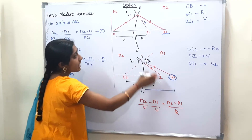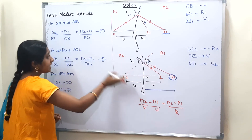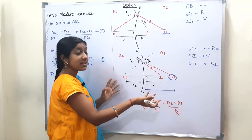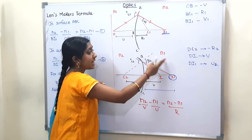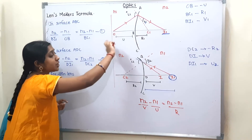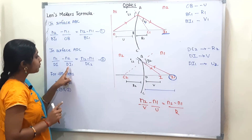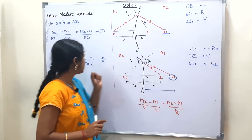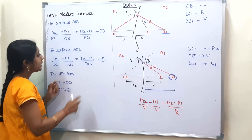The formula for refraction through spherical surfaces is: N2/V − N1/U = (N2 − N1)/R. We have already derived this formula in the previous video. For the first surface ABC, applying this formula: N2/Bi1 − N1/U = (N2 − N1)/BC1. This is the first equation. For the second surface ADC: N1/V − N2/Di1 = (N2 − N1)/DC2, where DC2 is the radius R2. This is the second equation.